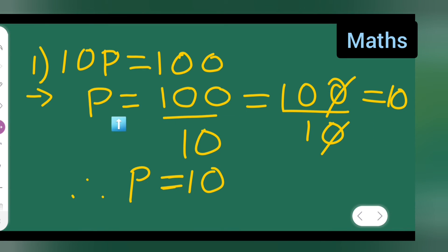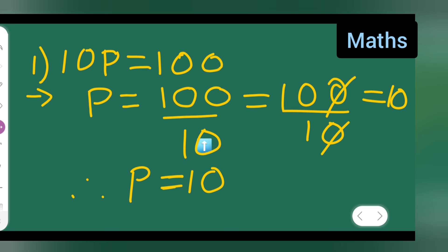You have to take this number down, so it will become 100 upon 10. So p is equal to 10 is your answer, because the zeros will get cancelled. I hope you all have understood how to solve 10p is equal to 100.